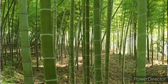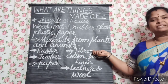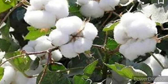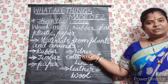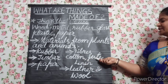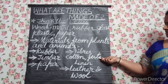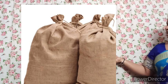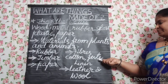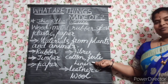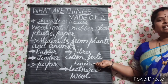We also get fibers from plants. First, cotton fiber — we get cotton fiber from the cotton plant, and cotton is used to make clothes. Jute fiber is obtained from the jute plant and is used to make bags and ropes. From the flax plant we get linen.